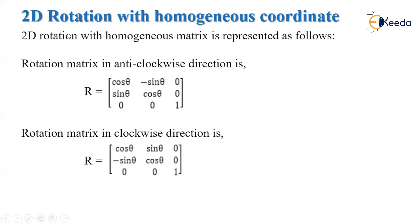We can also represent 2D rotation using homogeneous coordinates. Adding the homogeneous coordinate makes the matrix 3×3. The anticlockwise matrix becomes: [cos(theta), −sin(theta), 0; sin(theta), cos(theta), 0; 0, 0, 1], and the clockwise matrix becomes: [cos(theta), sin(theta), 0; −sin(theta), cos(theta), 0; 0, 0, 1]. This is all about 2D rotation.